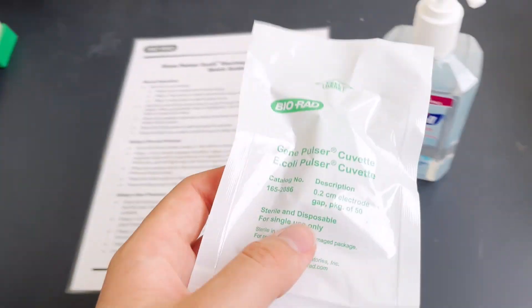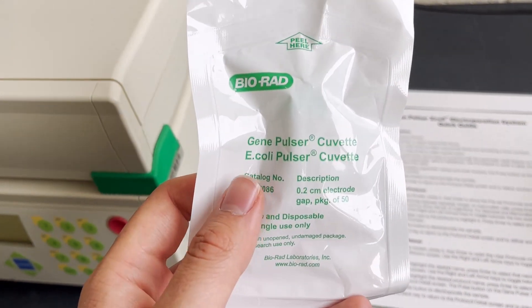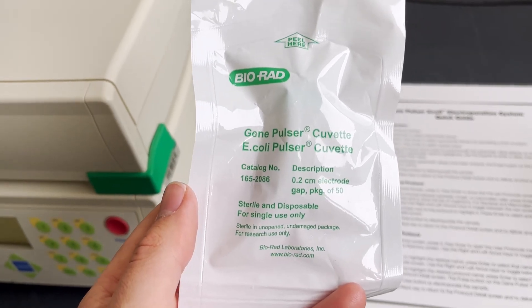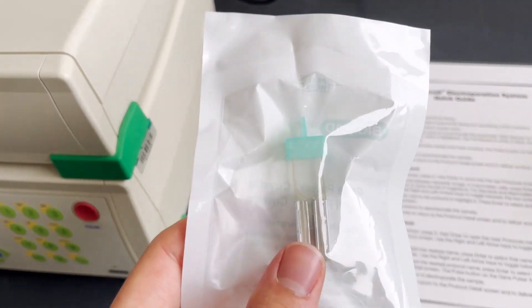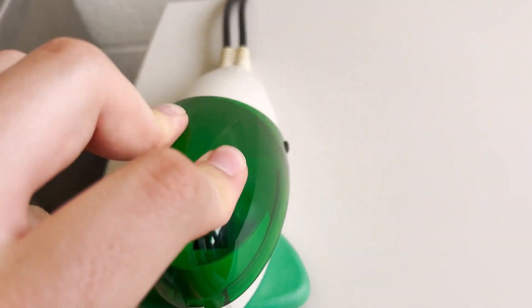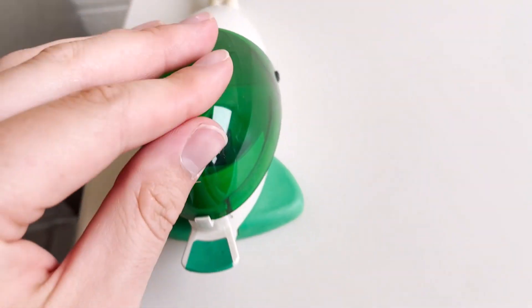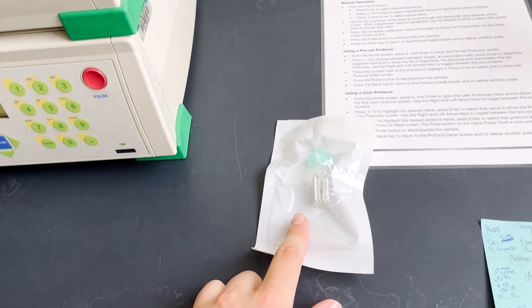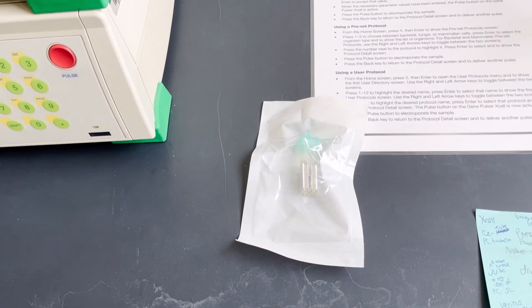This is an example of the cuvette from BioRad. These vary. You can see this one's for E. coli but they have different ones for different applications and different sizes as well. What you can maybe see is that this is grooved on the side and those grooves will only fit one way into this pod where that notch is. Make sure when you put these into the machine that they're very clean and not wet to avoid shorting out the machine.